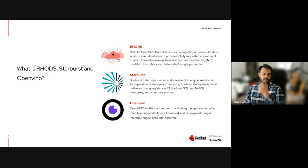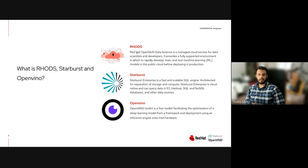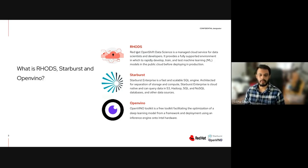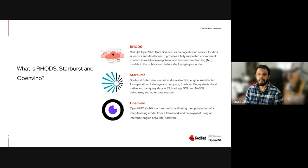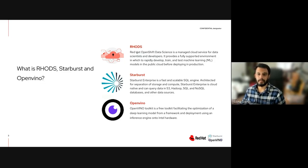A brief introduction: Red Hat OpenShift Data Science is a managed cloud service for data scientists and developers. It provides a fully supported environment in which to rapidly develop, train, and test machine learning models in a public cloud before deploying in production.